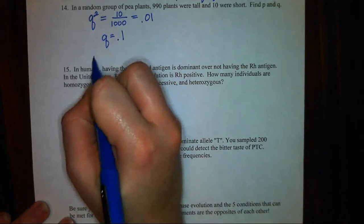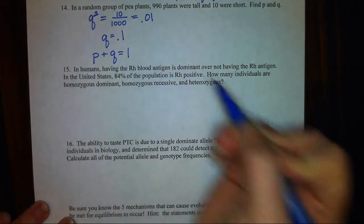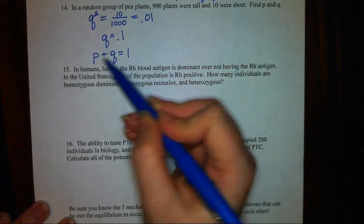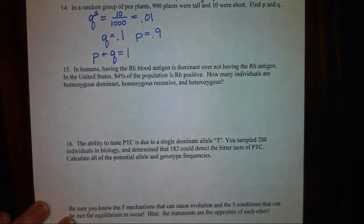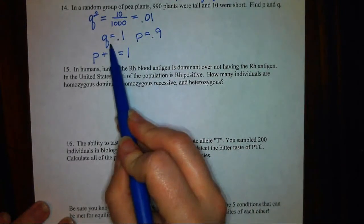My first Hardy-Weinberg equation was P plus Q equals 1. So hopefully you're saying, well, if Q is 0.1, then P must be 0.9. This tells me that 90% of my alleles in this scenario are dominant, with only 10% of my alleles being recessive.